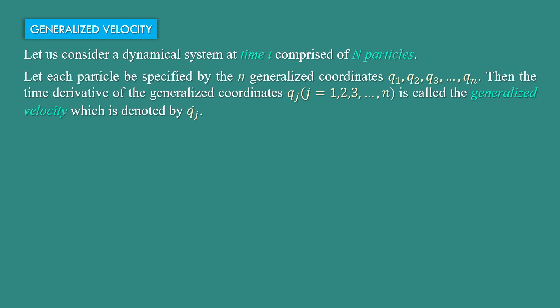Then the time derivative of the generalized coordinates qj, where j goes from 1, 2, 3 up to n, is called the generalized velocity, which is denoted by qj dot.